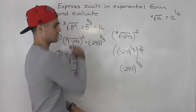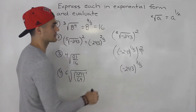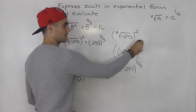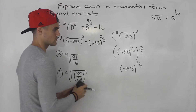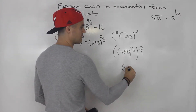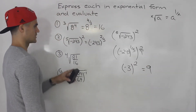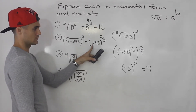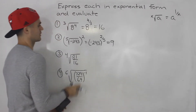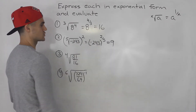To evaluate, I go back to the step where it's already in the format I like: denominator inside, numerator outside. The fifth root of negative 243 gives us negative 3, and then negative 3 to the power of 2 gives us 9. So the exponential form is negative 243 to the power of 2 over 5, and it evaluates to 9. You can verify by plugging either expression into your calculator.